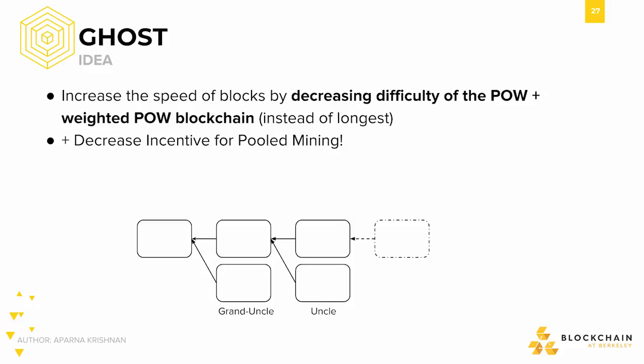In the end, GHOST reduces transaction time since the blocks are faster. It also decreases the incentive for pooled mining. By rewarding Uncle Blocks, we've reduced the need for being exactly the first new block on top of the longest chain. Also, since block times are so fast, sufficiently fast miners would want to reduce the overhead of communicating with pools anyway.